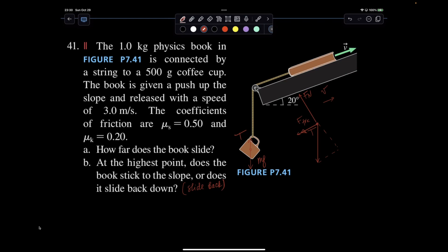And then from here, I'm going to write my Newton's second law for each one. I'm going to start with the cup. 0.5 times acceleration, which I do not know but I am looking for it, will be equal to 0.5 times 9.8 minus tension.